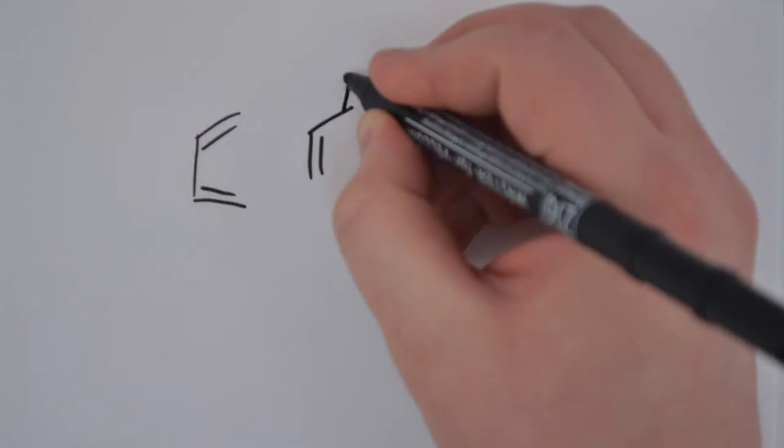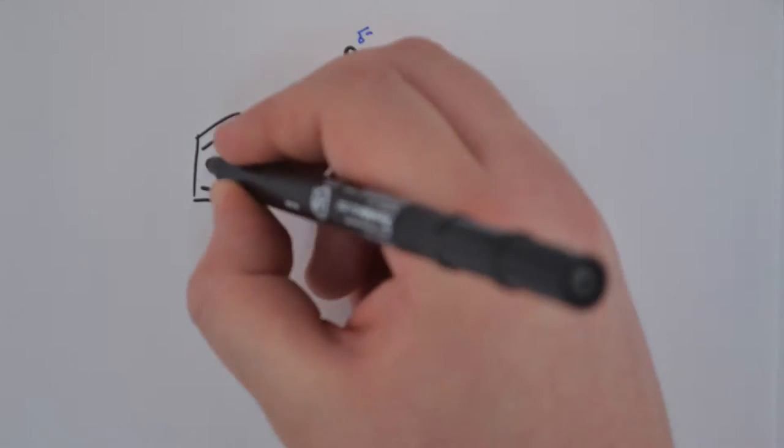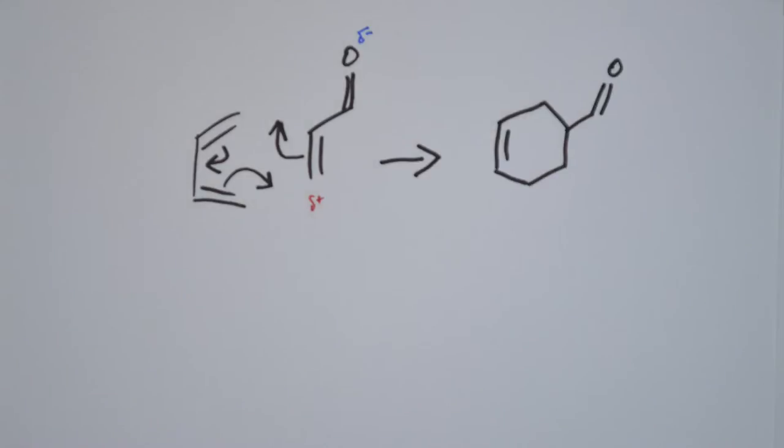The reaction between the dienophile and diene could look a bit like this. The carbonyl oxygen withdraws electron density from the double bond generating a partial positive charge at the terminal carbon. This action facilitates the transfer of electrons from the highest occupied molecular orbital of the diene into the lowest unoccupied molecular orbital of the dienophile.